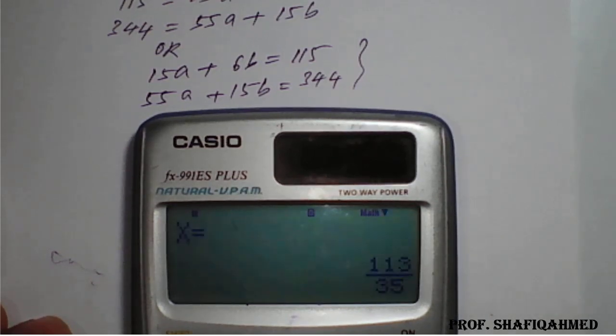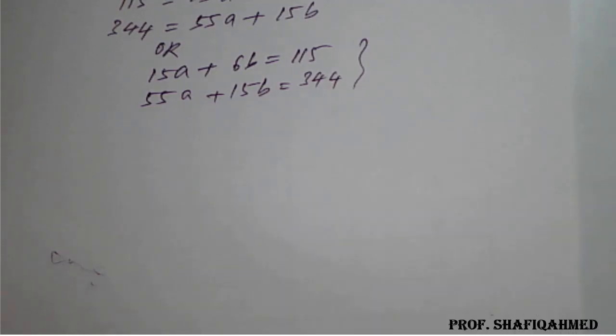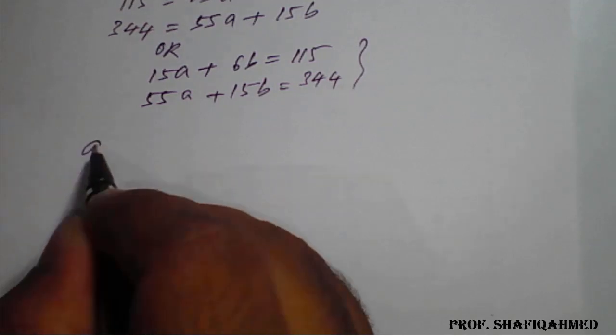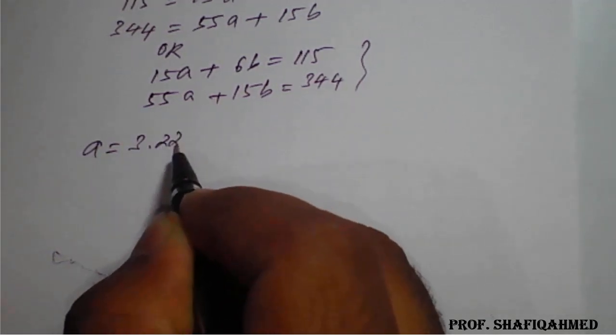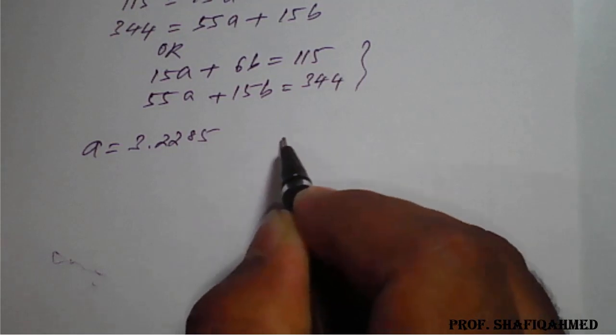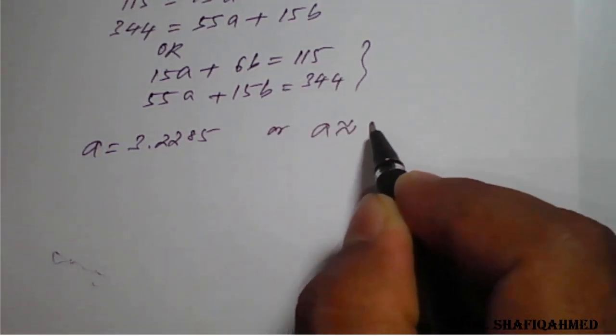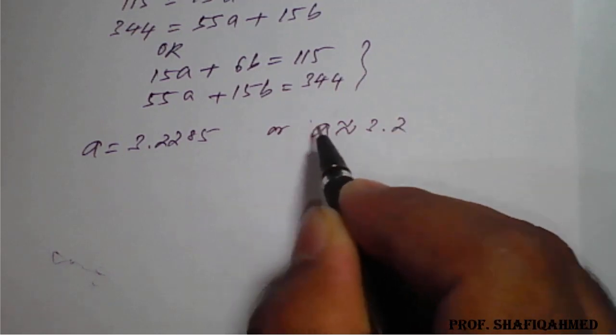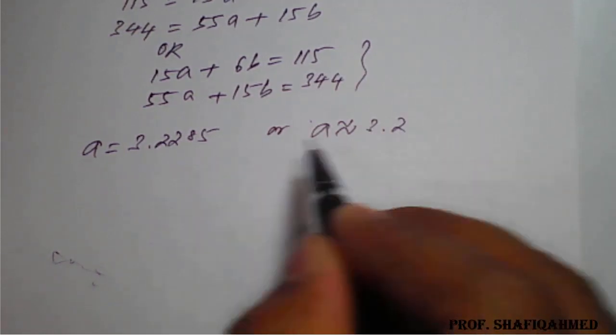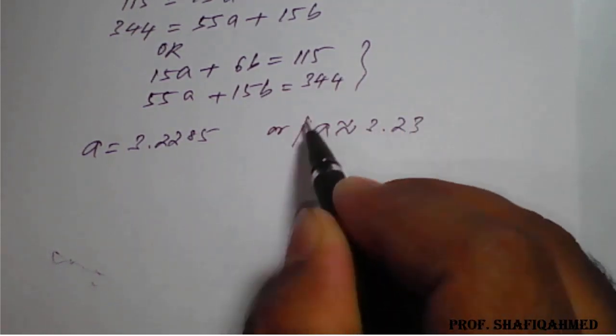So press the value of x - it is the value of a - 113 by 35. SD, so you will get 3.2285. So the value of a is 3.2285, or I can say that a is equivalent to 3.23, I will consider.